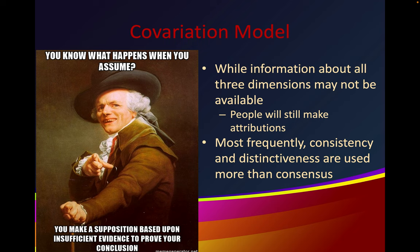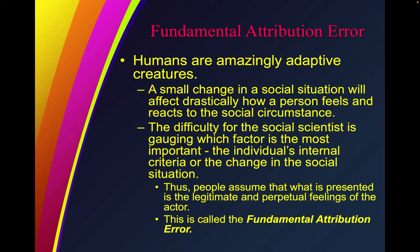While information about all three dimensions may not be available, people will still make attributions. Most frequently, consistency and distinctiveness are used more than consensus. Humans are amazingly adaptive creatures, but people assume that what is presented as the legitimate and perpetual feelings of the actor reflects their character — this is called the fundamental attribution error.